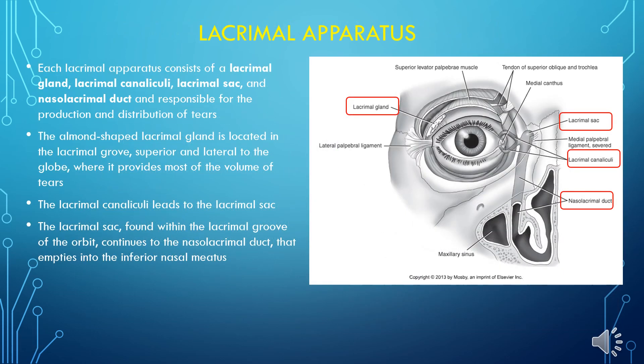Each lacrimal apparatus consists of a lacrimal gland, lacrimal canaliculi, lacrimal sac, and nasolacrimal duct, and is responsible for the production and distribution of tears. The almond-shaped lacrimal gland is located in the lacrimal groove, superior and lateral to the globe, where it provides most of the volume of tears. The lacrimal canaliculi lead to the lacrimal sac, which is found within the lacrimal groove of the orbit and continues to the nasolacrimal duct that empties into the inferior nasal meatus.